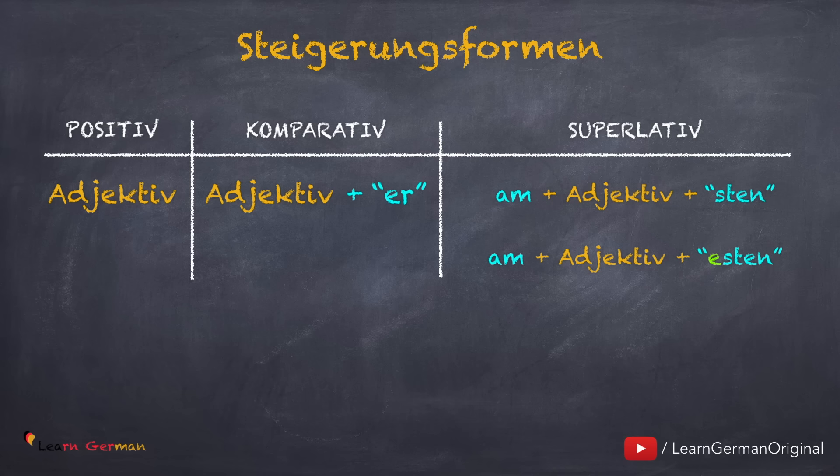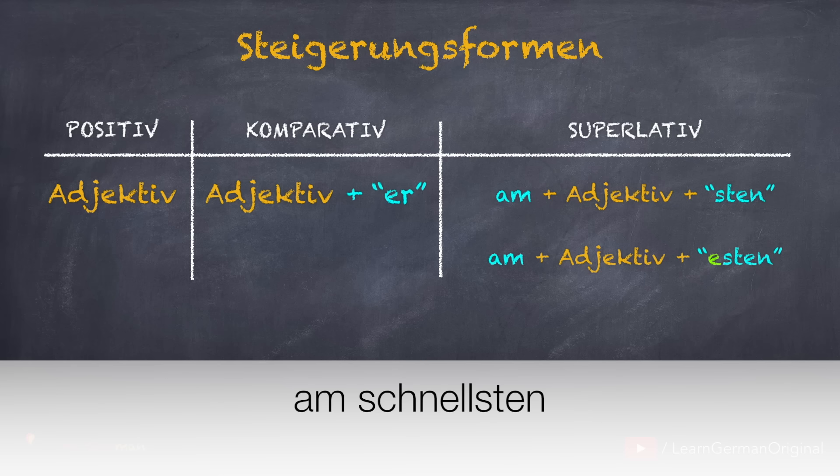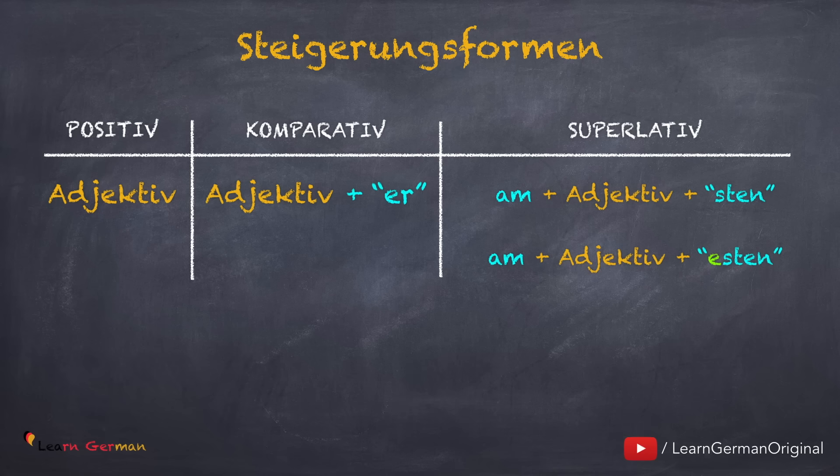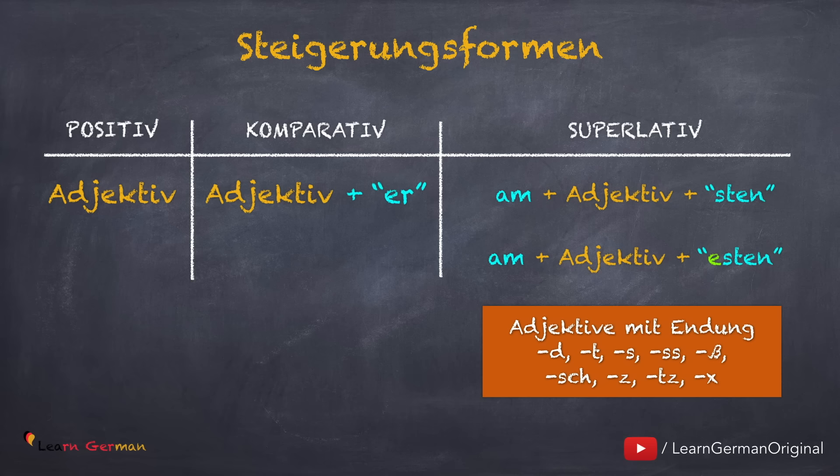The first ending (-sten) is used with almost all adjectives — for example, the ones we just did: am schnellsten, am leckersten. The second ending (-esten) is only used when your adjective ends in -d, -t, -s, -ss, -ß, -sch, -z, -tz, or -x.